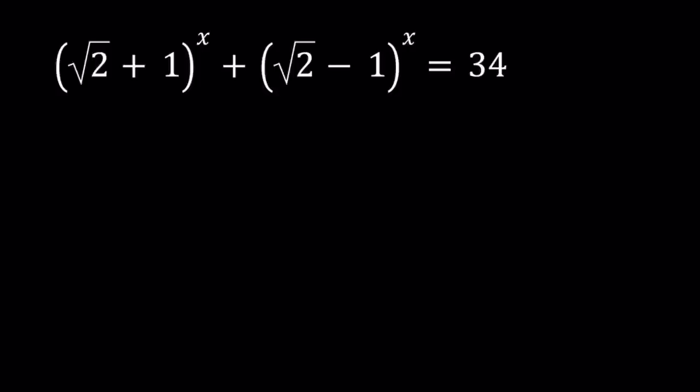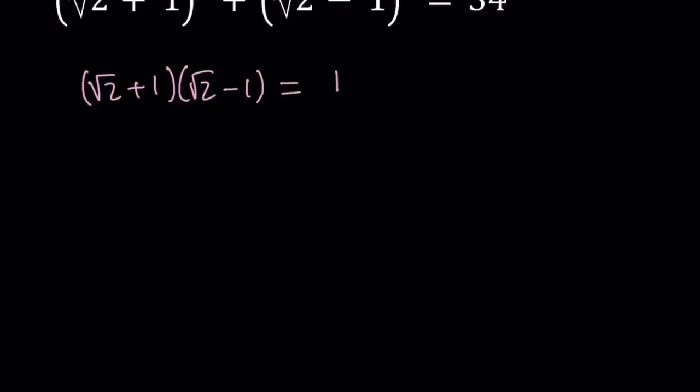First of all, I want you to note that square root of 2 plus 1 times square root of 2 minus 1 equals 1. Why? Because these two expressions are conjugates or you could also call them reciprocals. From difference of 2 squares, their product is 1.